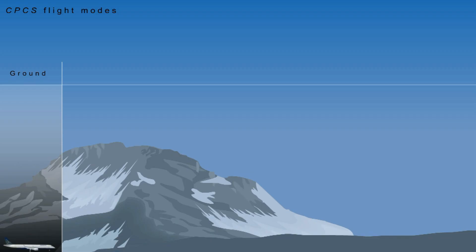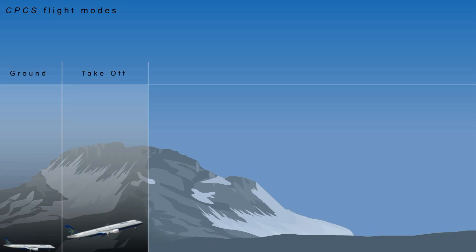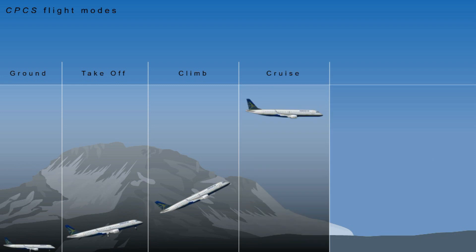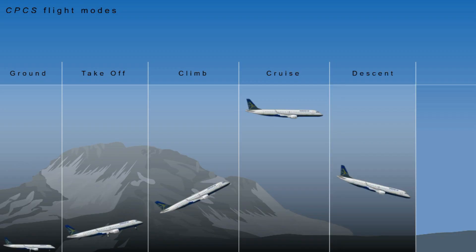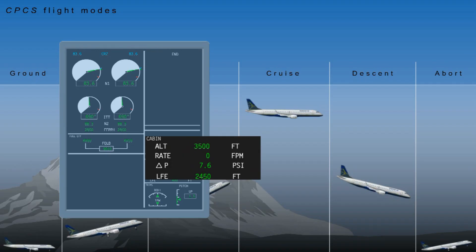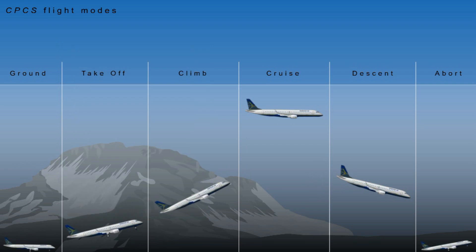The cabin pressure control system flight modes are: Ground — the aircraft is on ground but not within the takeoff run; Takeoff — the aircraft is performing the takeoff run; Climb — the aircraft climbs to the cruise flight level; Cruise — the aircraft is flying at a constant altitude; Descent — the aircraft is descending towards the landing field; and Abort — the flight is aborted and the aircraft returns to the takeoff field. ICAS indication LFE will return to takeoff field elevation if the present pressure altitude is below 10,000 feet or 5,000 feet above field elevation. Information from the FADAC, the ADC, and the FMS are used within the cabin pressure controller to determine the current flight mode.